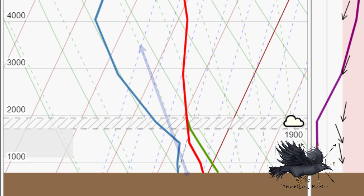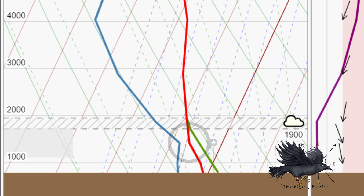Here you can see a sounding — you can see the wet adiabatic and the dry adiabatic. The red temperature line is pretty parallel to the dry adiabatic. Before it goes to the right, the air becomes stable and it kills the thermals.